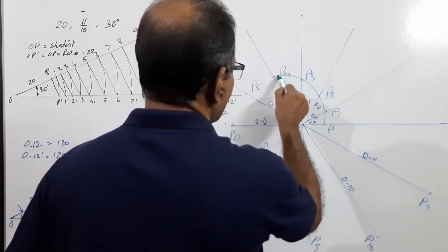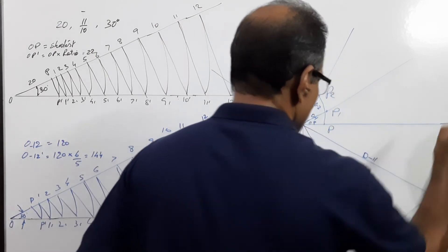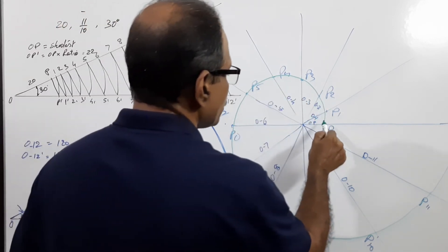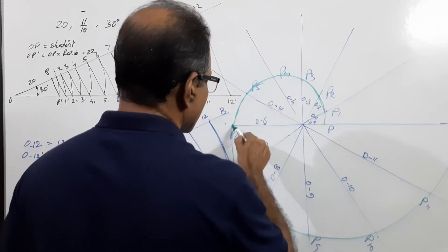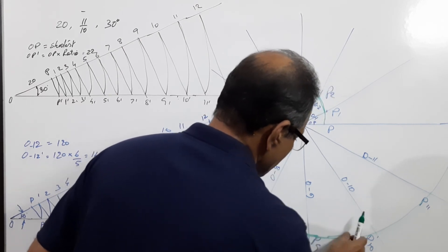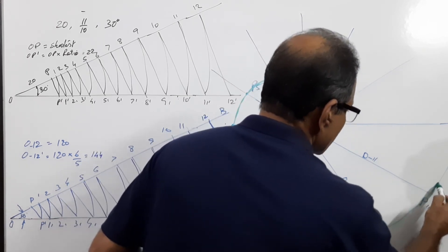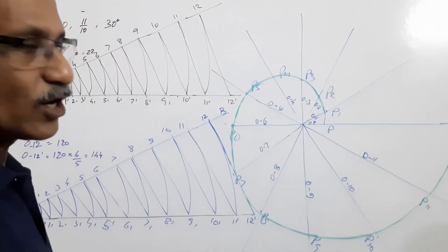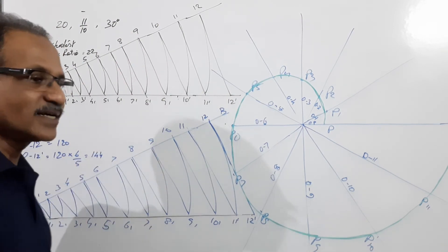P, P1, P2, P3, P4, P5, P6, P7, P8, P10, P11, P12. I hope it is clear to you. I will make it a little bit thicker. This is the logarithmic spiral when the largest radius is given.